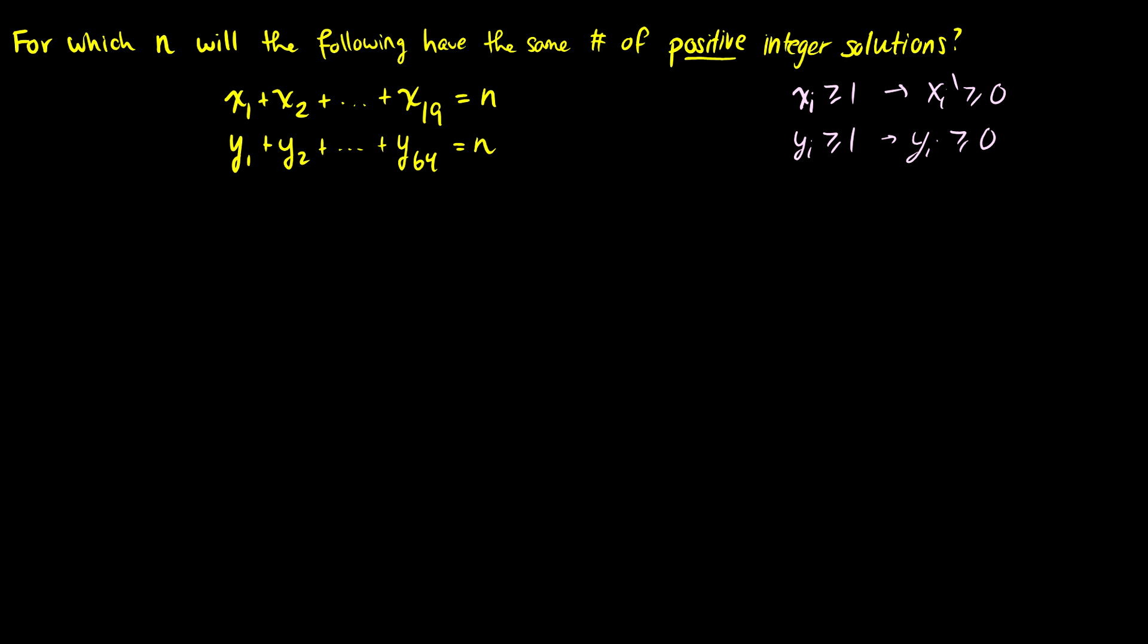So here's the quick jump here. So x1 prime all the way up to x19 prime is going to equal n minus 19 after we reduce it to all of our xi primes greater than or equal to 0. And our yi primes are going to also be reduced, so that will end up at n minus 64. So these solutions to these have to be equal. So if we remember our formula here, this is 19 plus n minus 19 minus 1 choose n minus 19, and this has to be equal to 64 plus n minus 64 minus 1 choose n minus 64.